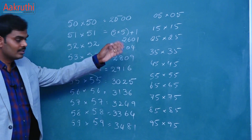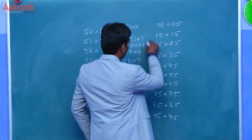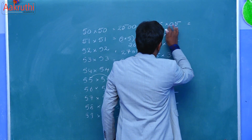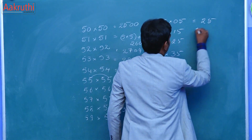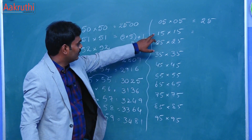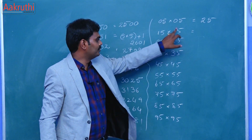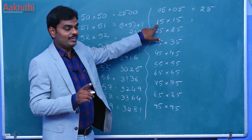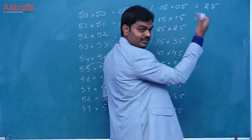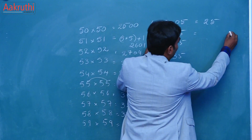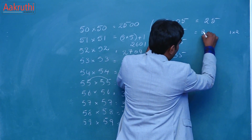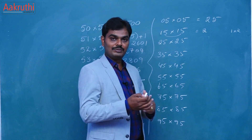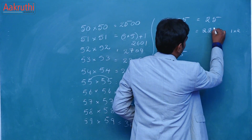We have a total of 10 numbers that end with 5, and here we have another shortcut. We already know that 5 into 5 is 25. For 15 into 15: after 1 we have 2, so the first step is 1 into 2. The next step is multiply these 2 digits, that is 5 into 5, which is 25. So the answer is 225.